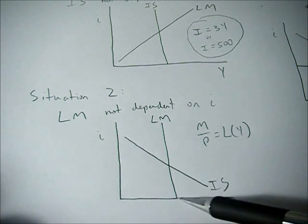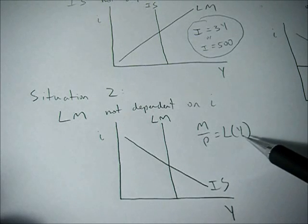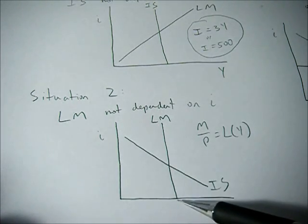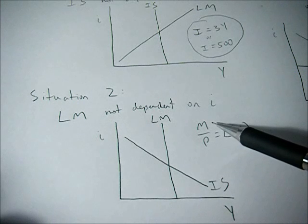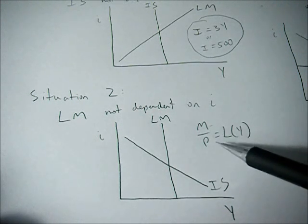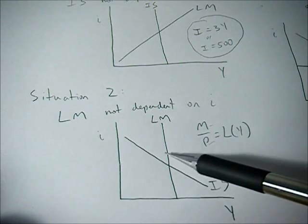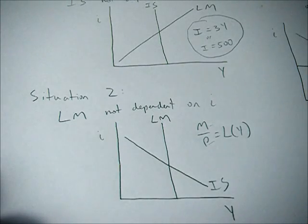So the amount of money demanded only depends on the GDP level. So if GDP changes, then we're going to have to see a change in either the money supply or the price level, and that's going to cause a shift in our LM curve.